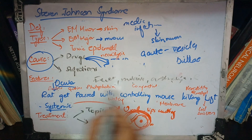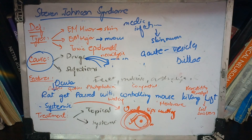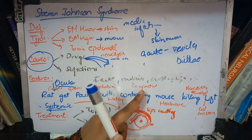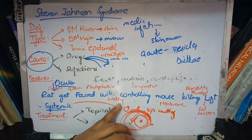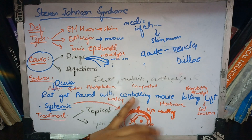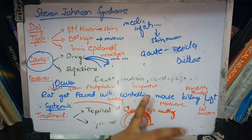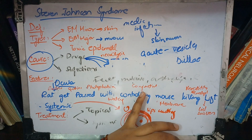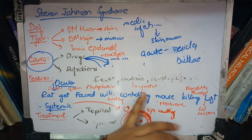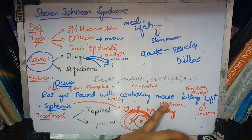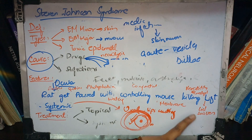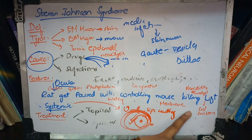The ocular complications can worsen over time. Severe conjunctivitis leads to watering, and watering worsens because the lacrimal drainage system becomes blocked. The goblet cells are destroyed, leading to dryness, and membrane formation occurs. Lid swelling progresses and eyelids can develop entropion, causing eyelashes to touch the cornea.